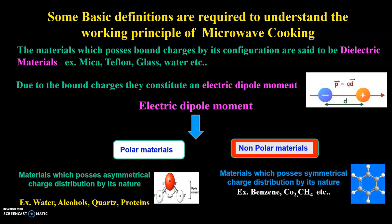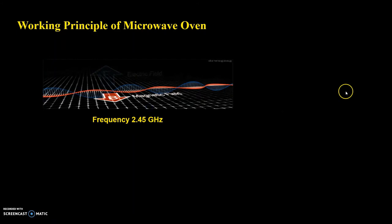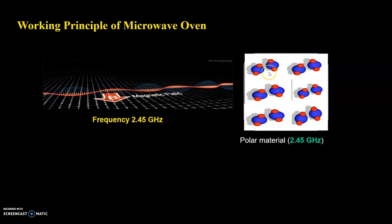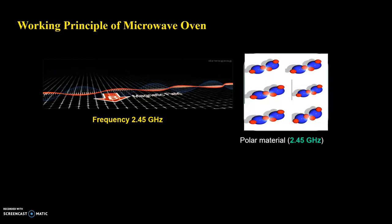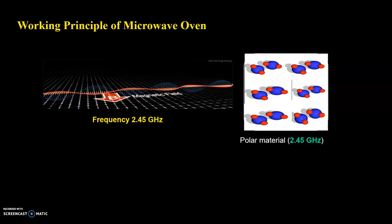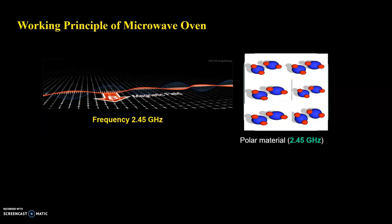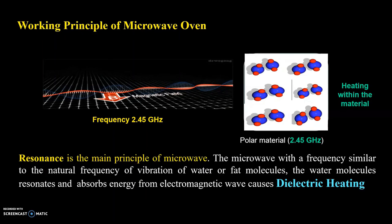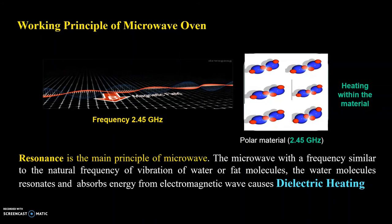In a microwave oven, we use polar materials — that is the reason food gets heated up inside. When an electromagnetic wave of frequency 2.45 GHz passes through a polar material such as water, the water dipoles try to rotate from one equilibrium position to the other. The rotational frequency of the water molecules equals the incoming frequency of the electromagnetic wave, causing resonance. The friction between the dipoles releases energy in the form of heat — this phenomenon is called dielectric heating. The microwave, with a frequency similar to the natural vibration frequency of water molecules, causes the water molecules to resonate and absorb energy from the electromagnetic waves.